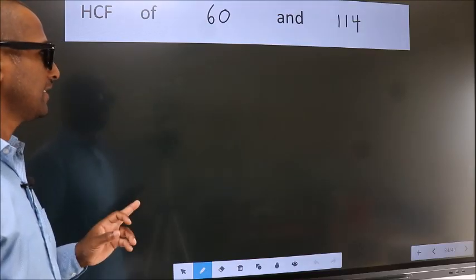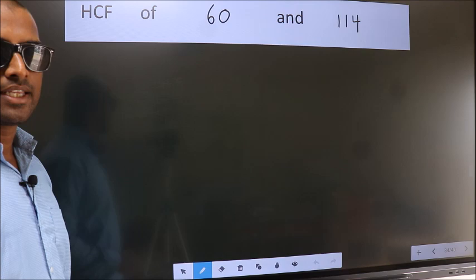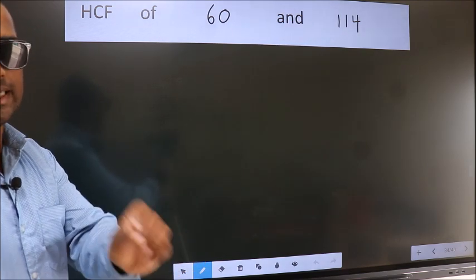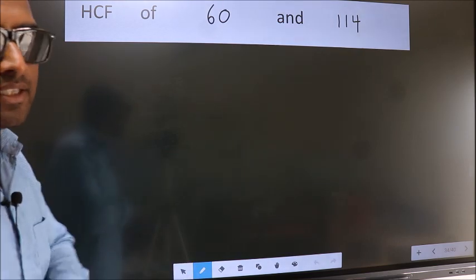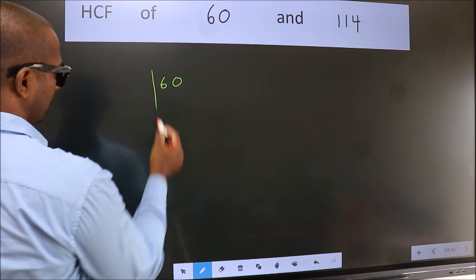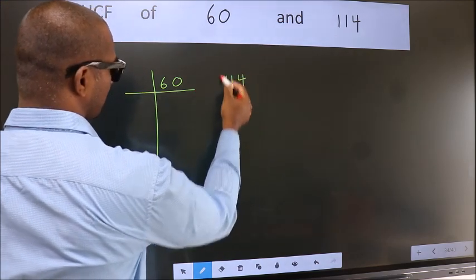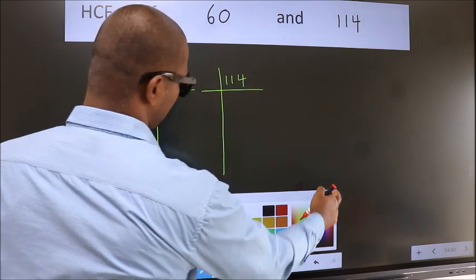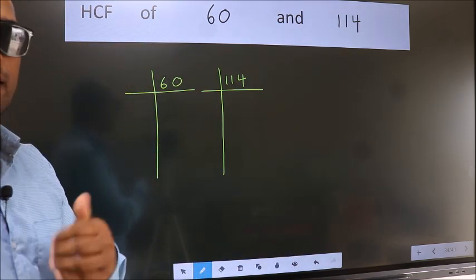HCF of 60 and 114. To find the HCF, we should do the prime factorization of each number separately. What I mean is, see, 60 here, 114 here. This is your step 1.